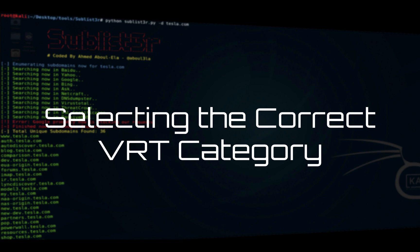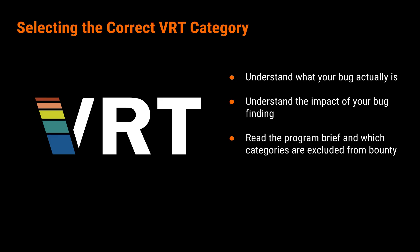Now that you know why you should make a good submission and why it's important, let's shift gears and talk about how to select the correct VRT category when reporting your bug. Selecting the correct VRT category is also extremely important. Understanding what your bug actually is will be key to getting it properly triaged. When you select the correct VRT category, the chances that your bug will move to triage will be higher and faster, as it's less work for the analyst. This also plays into writing a good description of the bug and a good proof of concept to reproduce it.